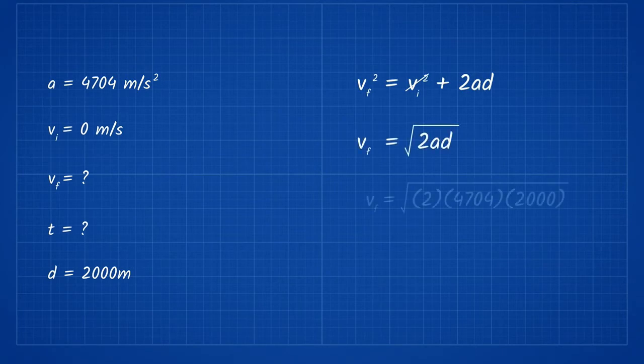Popping this figure into a kinematic equation, we get a final speed of 4.3 kilometers per second, which would manage to escape Mercury's orbit. All of this would happen in less than one second.